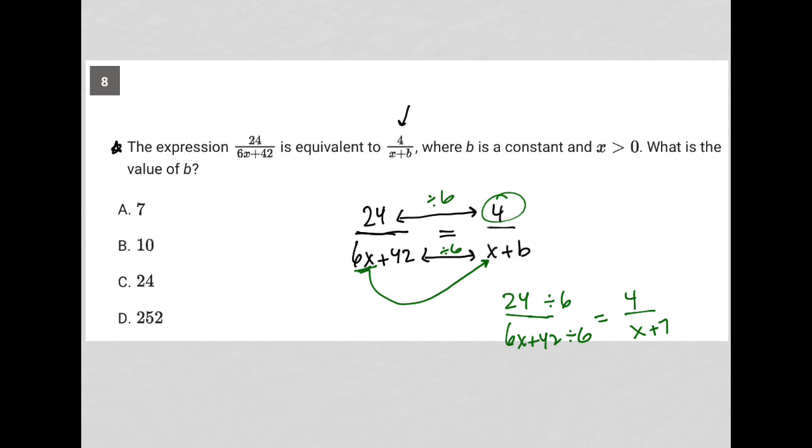And therefore, my b value, right, the number in the position where the b is, is 7. So b must equal 7.